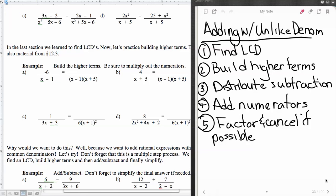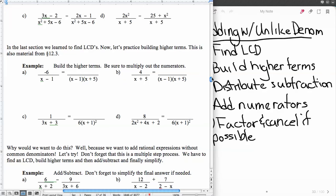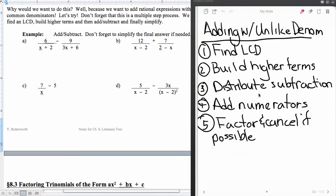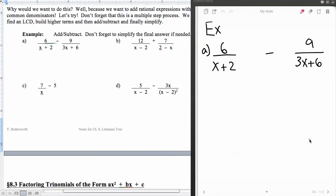Okay, now adding when we have unlike denominators, we're going to need to apply finding the least common denominator and then building higher terms. So if we have an unlike denominator, we have to find the least common denominator, like we just did. Then we have to build the higher terms, like we did just a little bit ago. And then we distribute subtraction, add the numerators, factor and cancel if possible, just like we would when we had common denominators.